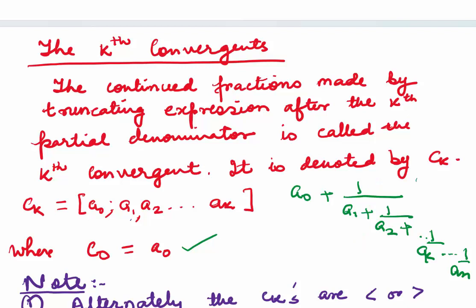Let us say we go up to a2, truncating here. Then my C2 will be [a0, a1, a2]. If I truncate at ak, then [a0, a1, a2, ... ak] will be my Ck. So this is what we mean by the convergents.